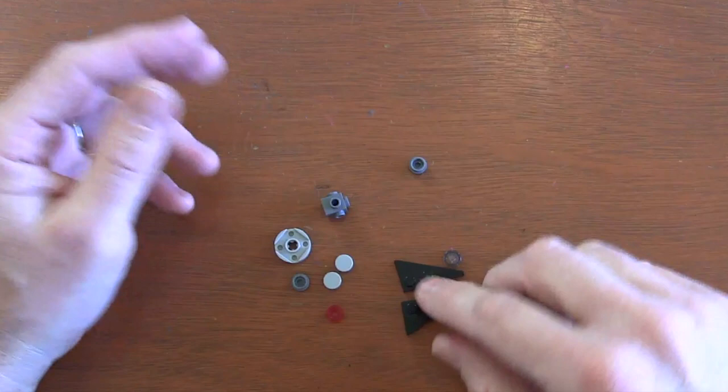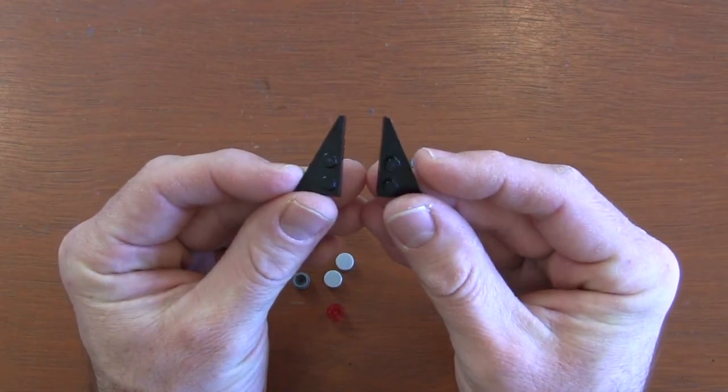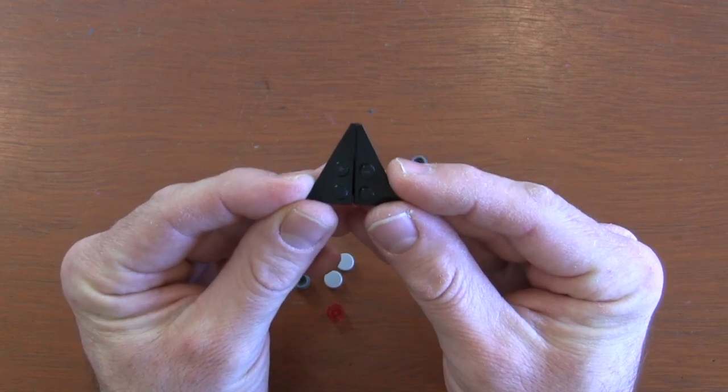We're going to start with the wings of our Sith TIE fighter. To do that, we're going to get these 4x2 left and right wedge pieces. We're going to put them together to form a larger triangle.